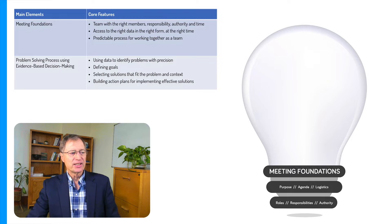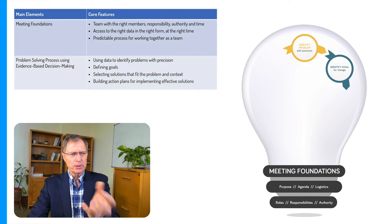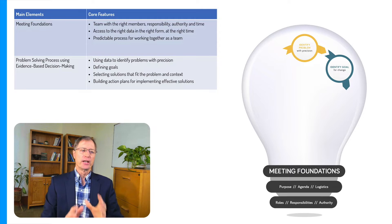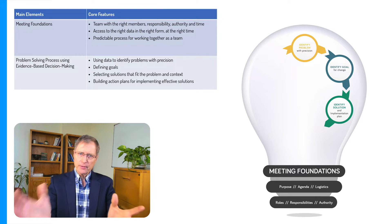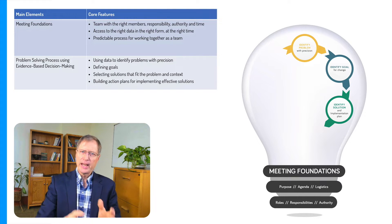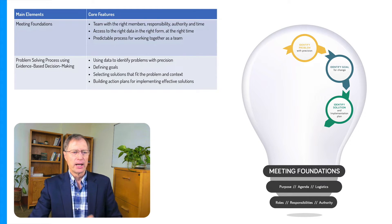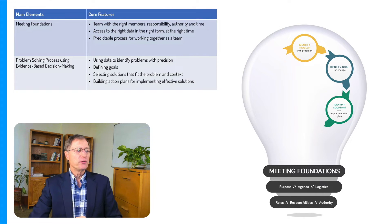If you look at the light bulb, you see six small circles. The first focuses on how you identify a problem. The second focuses on the extent to which you can identify the goal — how would we know if we've made the difference we wanted? The third, and really significant one, is the extent to which you use data to identify a solution that is evidence-based, practical, and fits the cultural and organizational context. Those three — identifying the problem, building the goal, and building a solution — are the problem-solving core of TIPS.